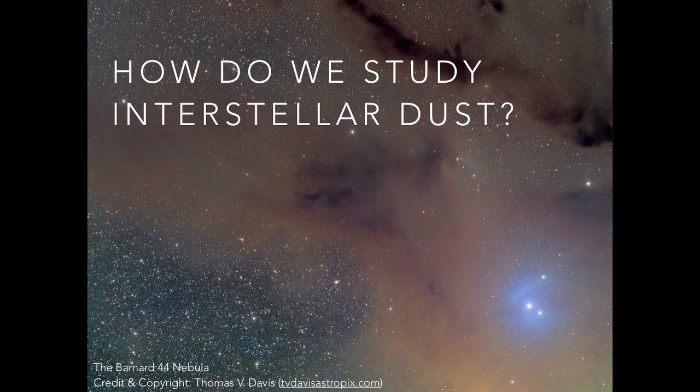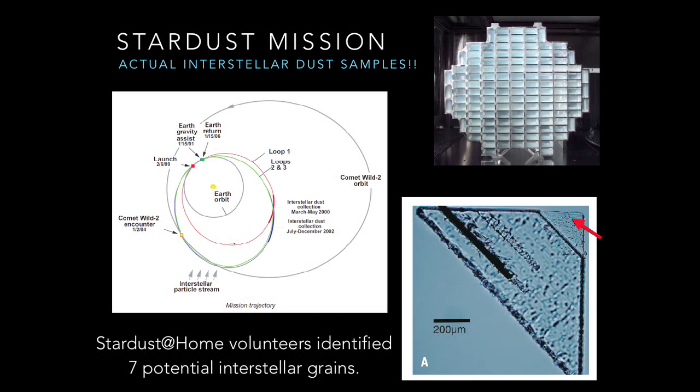I said that for astronomical objects, what we have is light — and that's very much true for interstellar dust. But there is one fun exception. Several years ago, a space probe called Stardust was sent up to orbit around the solar system and collect particles of dust. It had something called an aerogel — a big gel substance — so when a dust grain ran into it, it would get stuck. It swept around the solar system, catching dust, orbited around a couple of times, then came back to Earth with the samples.